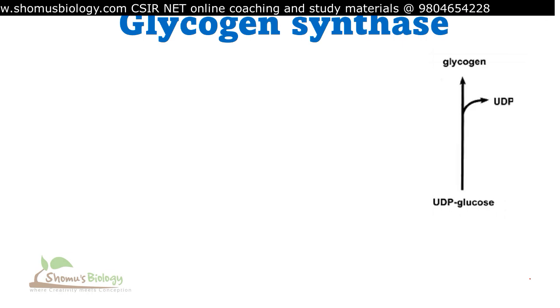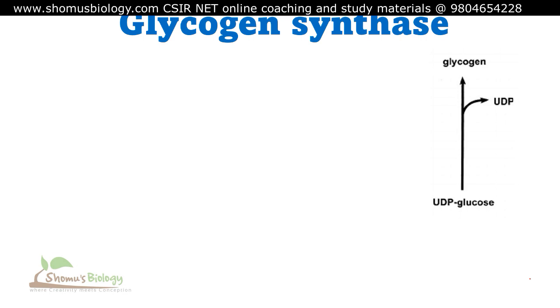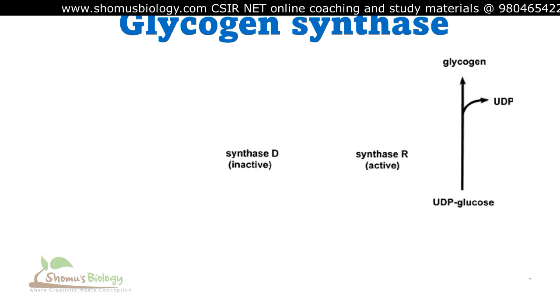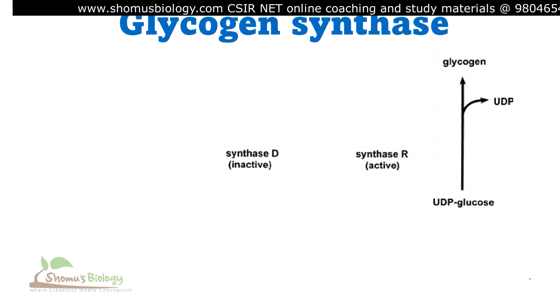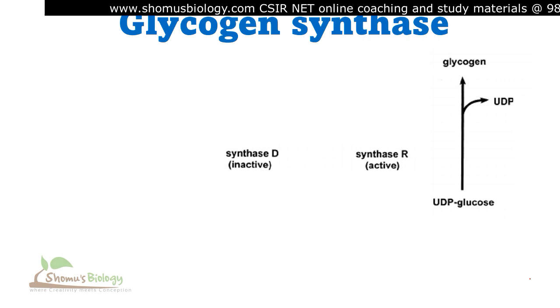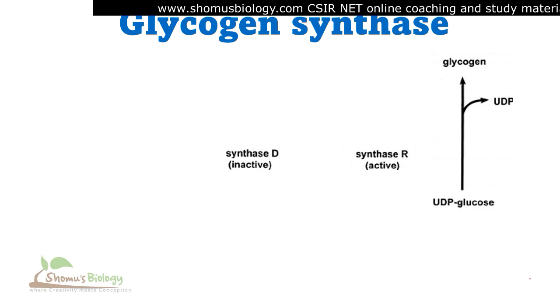This glycogen synthase enzyme is present in two different forms in a cell: an inactive form known as glycogen synthase D form, and an active form known as glycogen synthase R form.